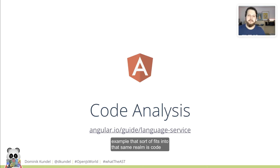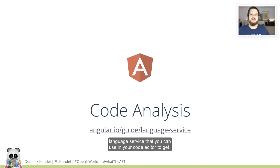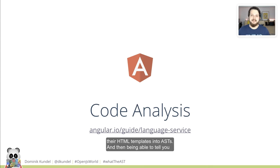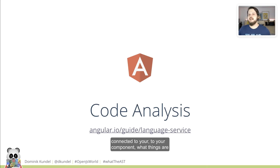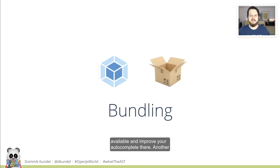Another example that fits into the same realm is code analysis. Angular uses this to build a language service you can use in your code editor to get better autocomplete. The way they're doing that is by turning their HTML templates into ASTs and then being able to tell you, based on where your cursor is and how your template is connected to your component, what things are available and improve your autocomplete there.